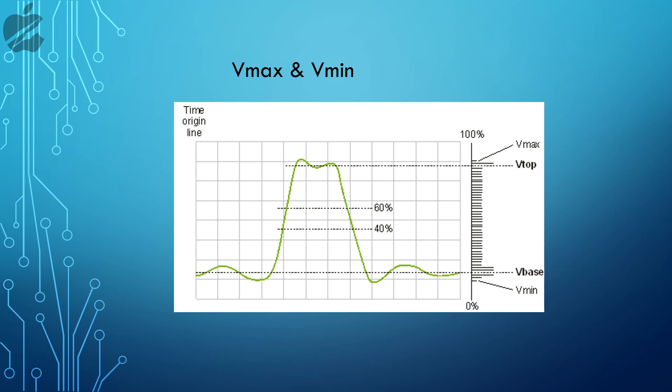Vmax is the absolute maximum value of the waveform and Vmin is the minimum value of the waveform.